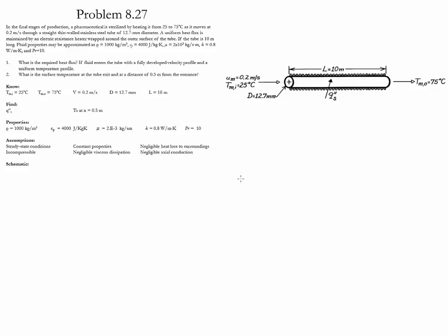We consider this problem to be steady and one-dimensional. We neglect the conduction taking place on the wall of the tube and we also neglect viscous dissipation. The first part of the analysis is to calculate the mass flow rate. The mass flow rate is equal to density times velocity times the cross-sectional area, which gives us 0.0253 kilograms per second.